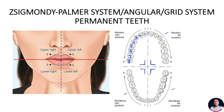To identify a specific tooth, just use the symbol for that quadrant and place the tooth number within it. For example, the right maxillary first molar would be written one way, and the left maxillary first molar another way. Similarly, the left mandibular canine and the right mandibular second premolar each have their own notation. Though this system is simple and easy to use, it is difficult to communicate using this system.